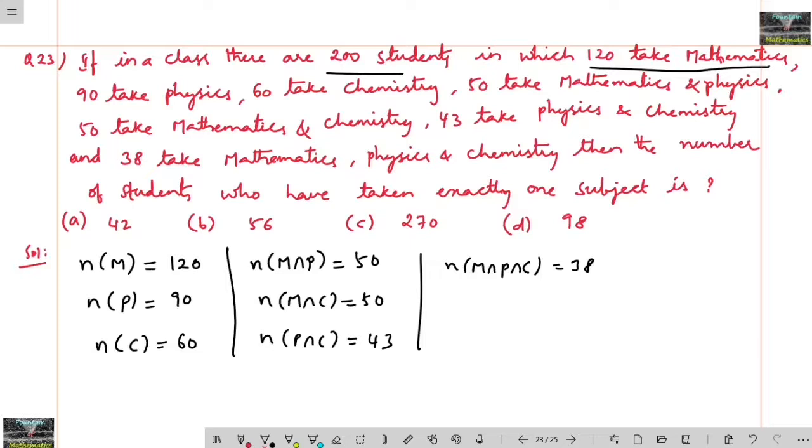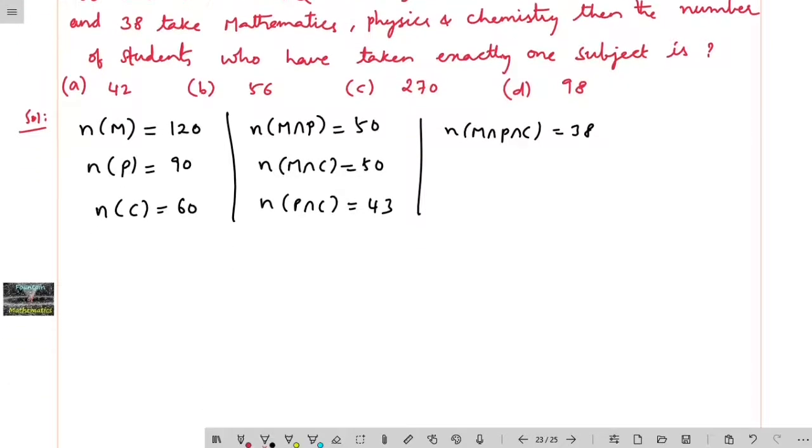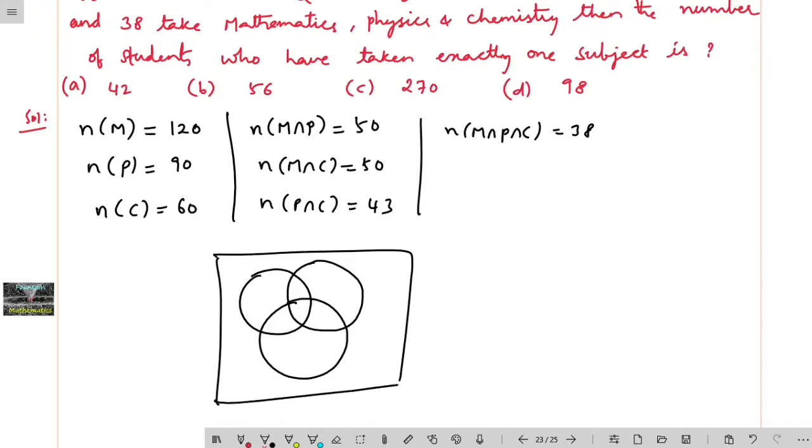Then the number of students who have taken exactly one subject. First let me put this data in a Venn diagram. So this is maths, physics and chemistry - maths, physics and chemistry.